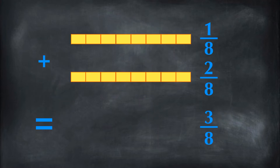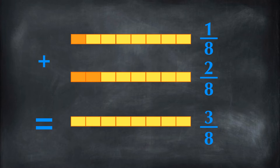Here is a visualization when 1 eighth is being added with 2 eighths. When these two fractions are added, we add 1 piece out of 8 pieces and 2 pieces out of 8 pieces. Therefore, we get 3 pieces out of 8 pieces. As you can see here, the denominator does not change, and only the numerators have been added.